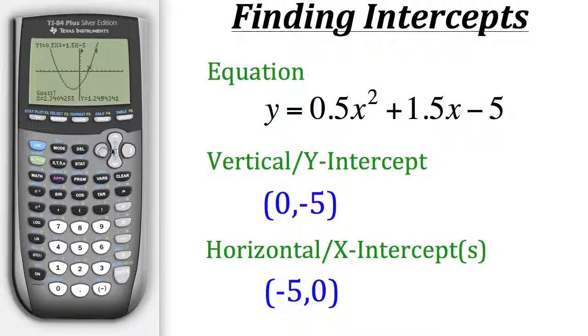And again the calculator is going to search in between those two arrows. So we could just hit enter. Now for this intercept we could see that our x-value will be two when y is zero. So our second horizontal intercept is two zero. And that's how you use the graph to find intercepts on a calculator.